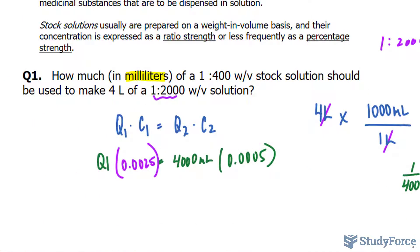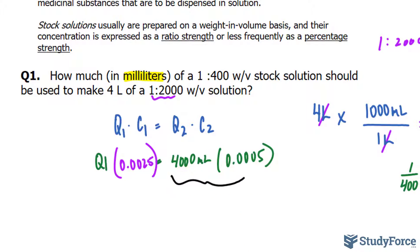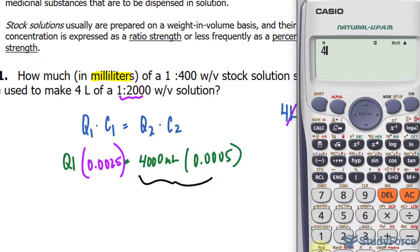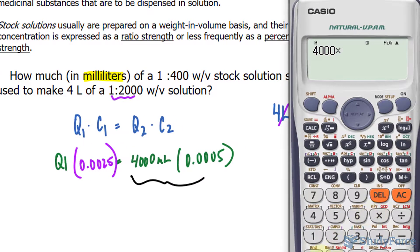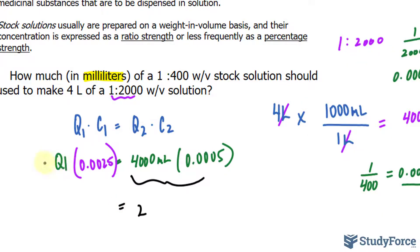From here, all we have to do is solve for Q1. And that can be done by multiplying these two factors first. So 4,000 times 0.0005. The right side is equal to 2. And on the left side, we will rewrite this.